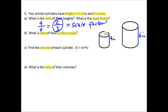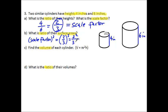So if our scale factor is 2 to 3, how can we find the ratio of the surface areas? Remember, we said the ratio of the areas is the scale factor squared. So that has to be 2/3 squared. Squaring the 2 and squaring the 3, we get 4/9. That's the ratio of our surface area.